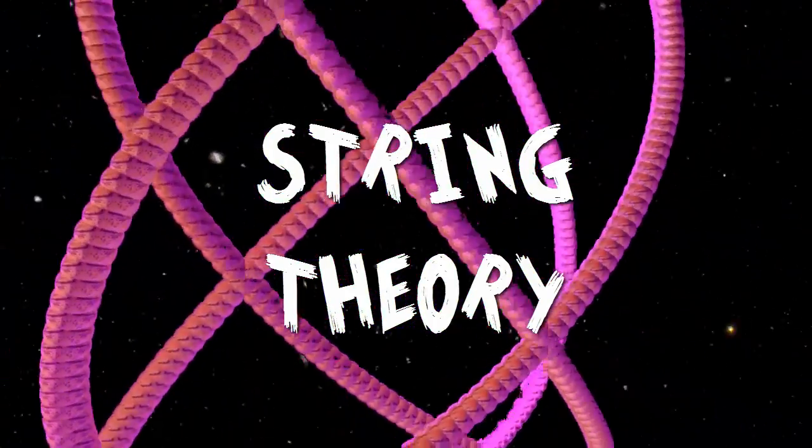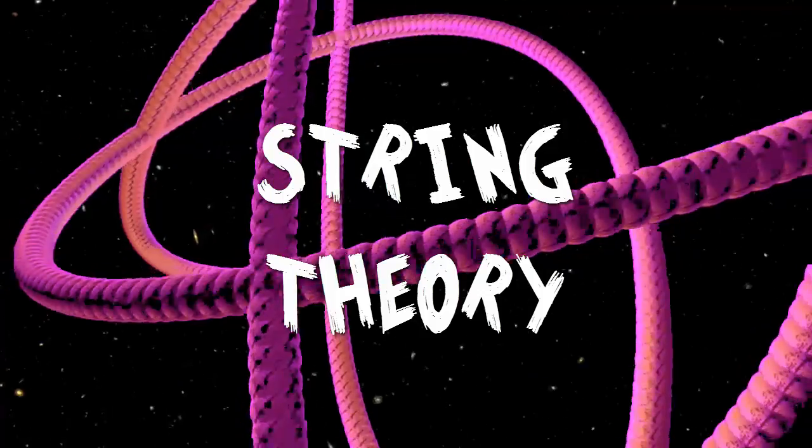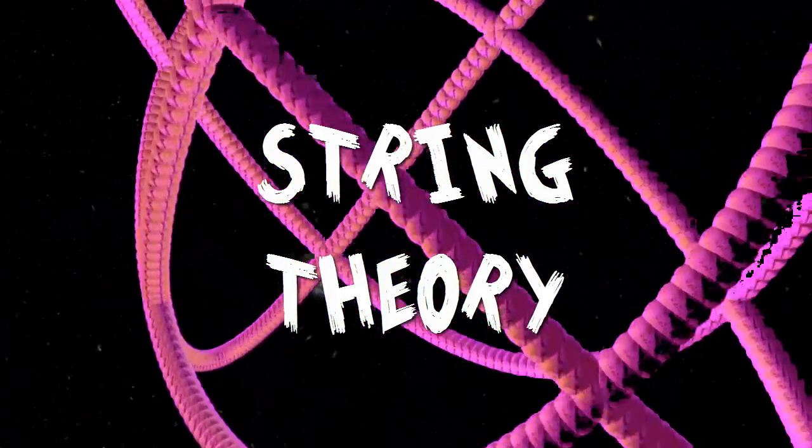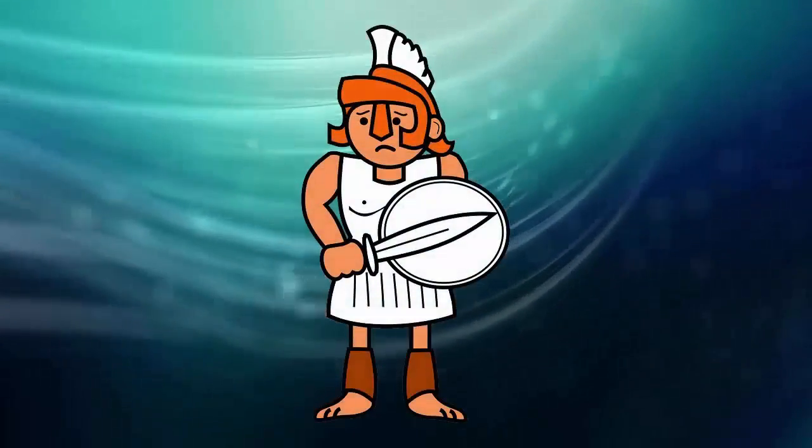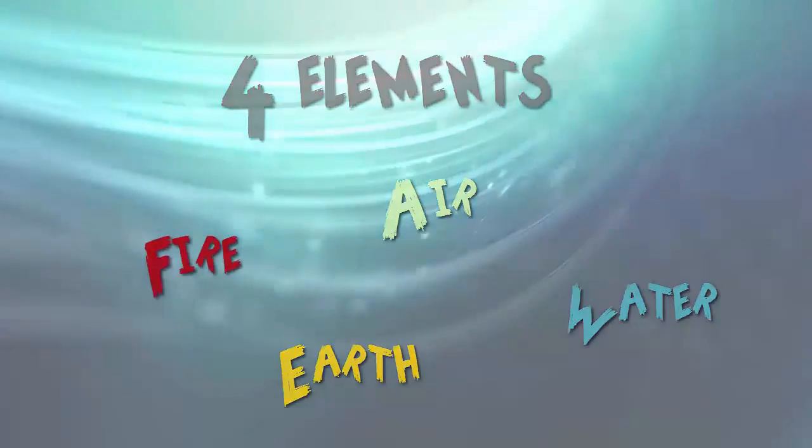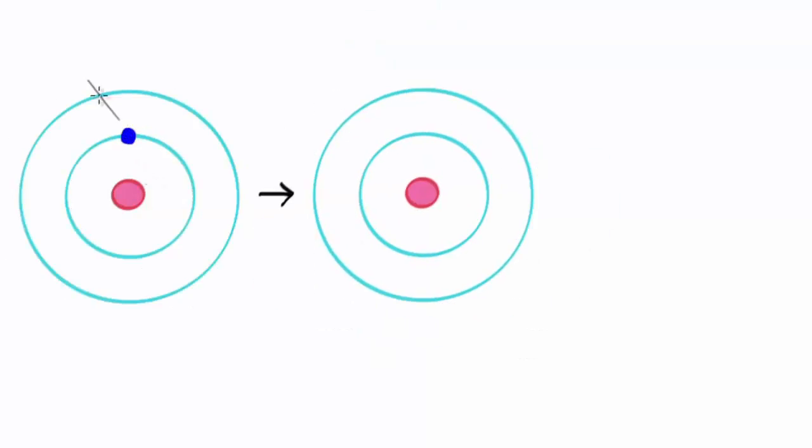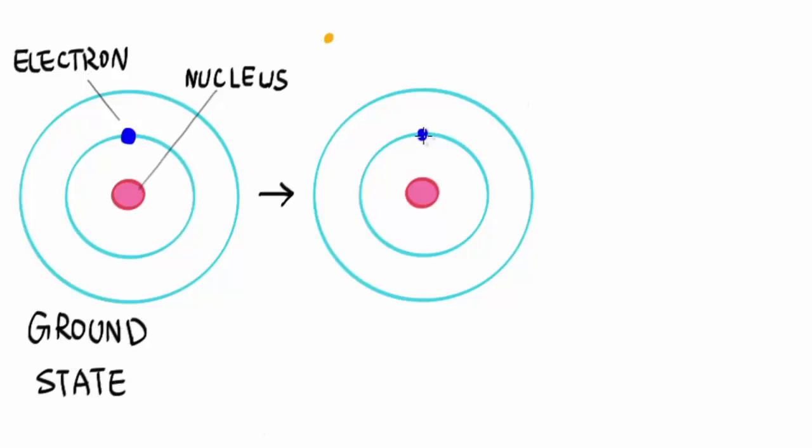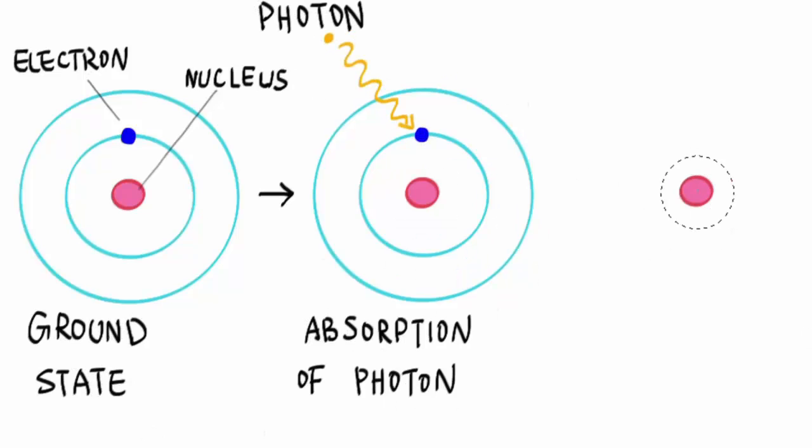To understand the string theory, let's take a quick look at the four forces which control everything in our universe, which the string theory unites. So, before modern science, the ancient Greeks thought that the universe is made of four elements: air, water, earth, and fire. But today, we know that our universe is made up of atoms and subatomic particles, held together by only four forces.